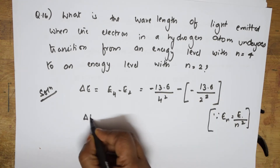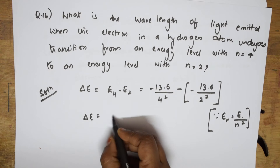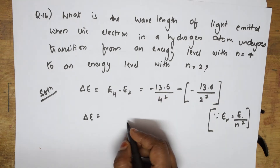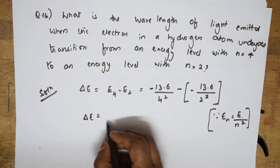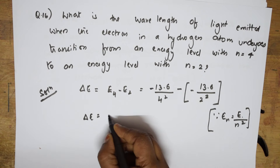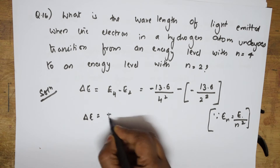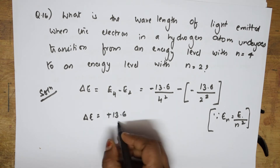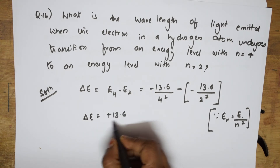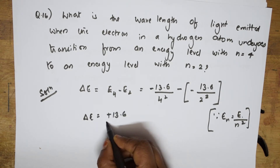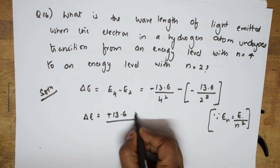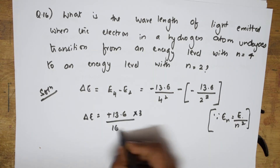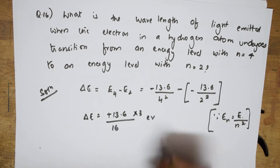Let us solve this. ΔE equals — minus into minus gives plus — and this becomes +13.6 × 3. When I solve this taking the LCM, I get 16 electron volts in the denominator.